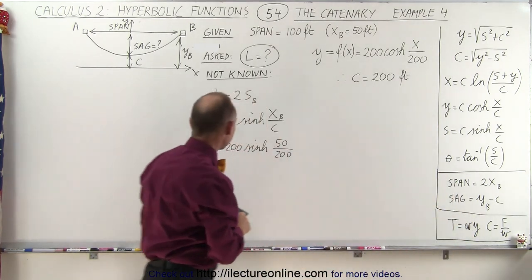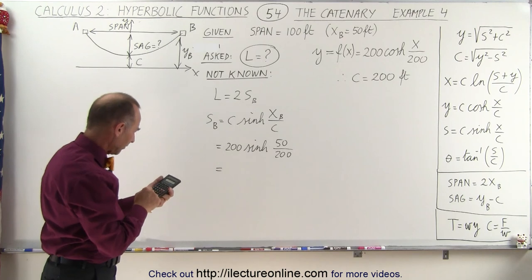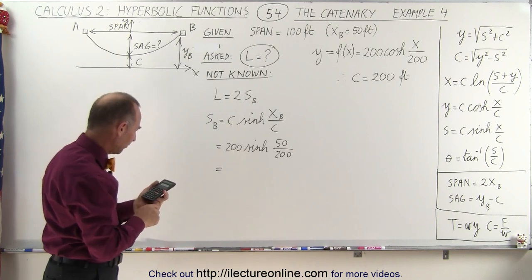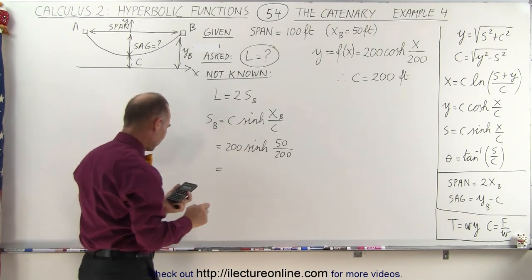Let's find out. So we have one quarter, 0.25. Take the hyperbolic sine of that and multiply that times 200, and we get 50.52.